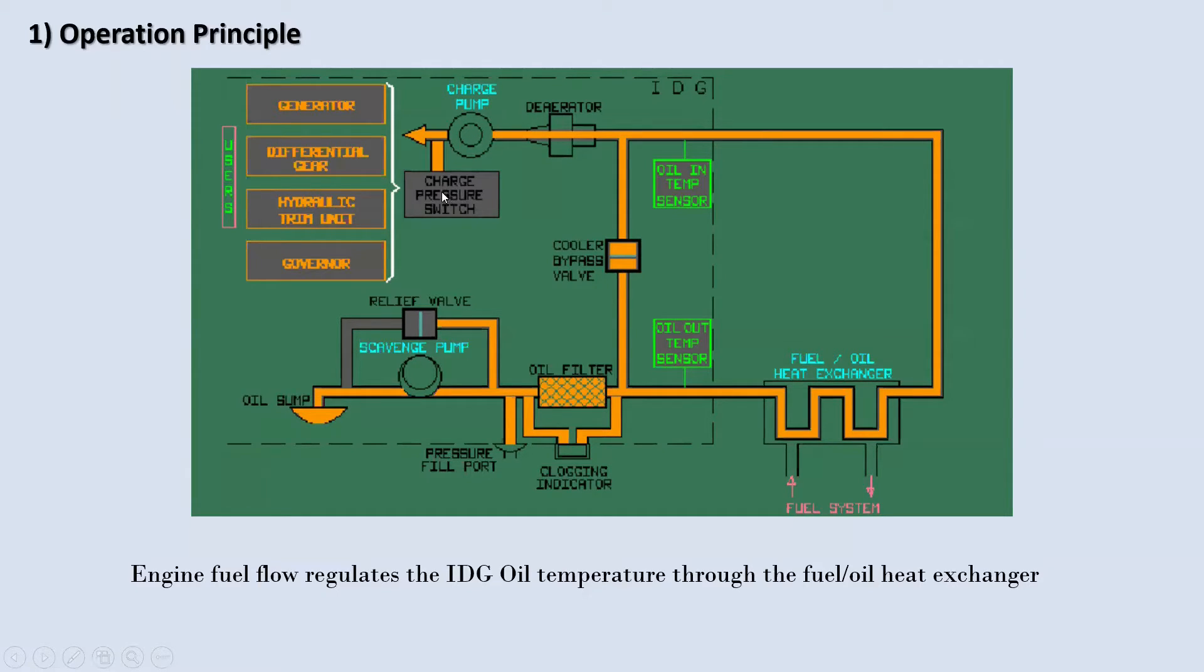Then the charge pump and the charge pressure switch, then it goes to the generator, differential gear, hydraulic trim unit, and also governor. Let's break it down. Think of the scavenge pump as your oil's personal trainer. Its job is to push the oil through filters and a heat exchanger. It's like how a trainer guides you through exercise to keep you healthy and fit. This process ensures the oil stays clean and at the perfect temperature.